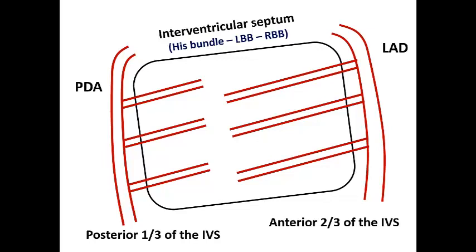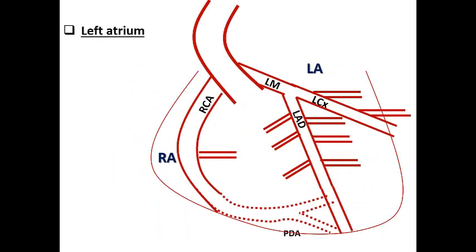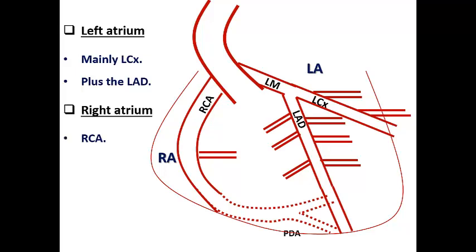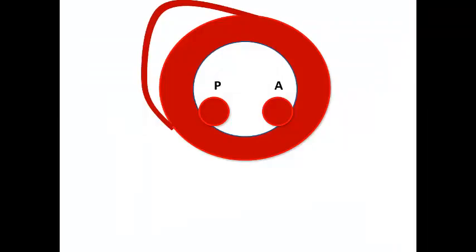Regarding the atria: the left atrium depends mainly on the LCX as it lies lateral to the left ventricle, and also on the LAD. The right atrium depends mainly on the RCA as it lies on the right side of the right ventricle. Both atria can depend on luminal blood from their endocardial surface, but in the left atrium this is oxygenated blood from the pulmonary veins, whereas in the right atrium it is deoxygenated blood — a negligible oxygen source. So the right atrium is more liable to infarction than the left atrium.